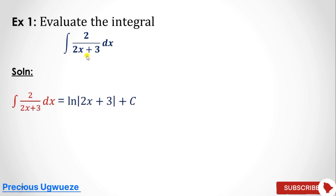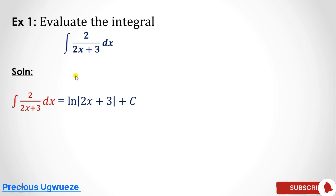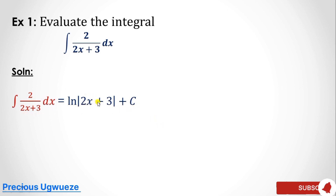Whenever you are given a fractional integral, the first thing you should do is check: is the derivative of the denominator equal to your numerator? If not, can you manipulate it so that with some constant coefficient, the numerator gives you the derivative of the denominator? The derivative of the denominator here is equal to 2, so our integral is simply the natural log of the denominator function, plus constant C.